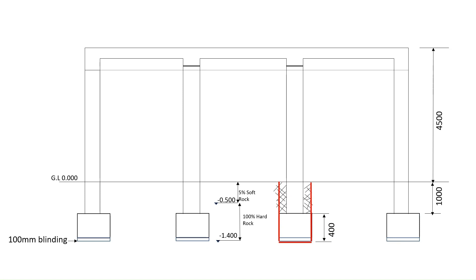The third and final drawing provides a section through our concrete structure, and is crucial as it gives us information about the height of the columns. The height of the concrete frame from the top of the column bases to the top of the slab is 5500 millimeters. The concrete for the columns will be measured from the top of the column base to the underside of the deepest beam, as discussed earlier.